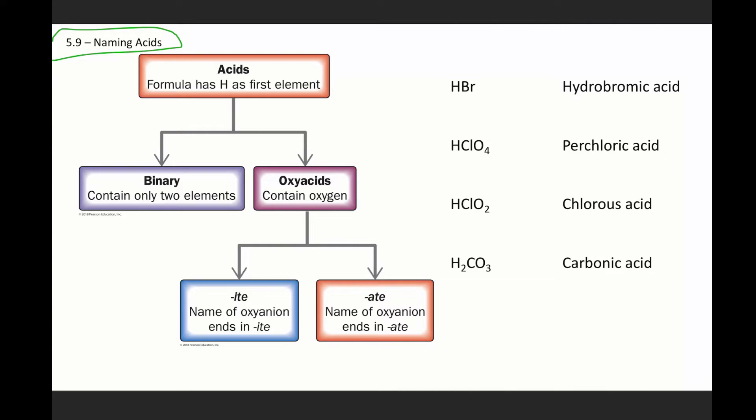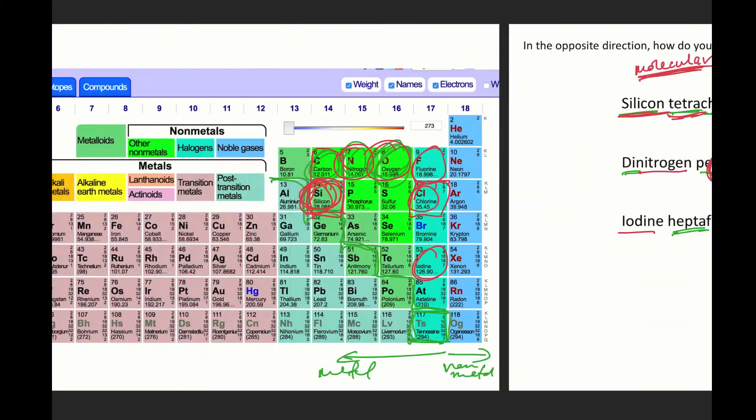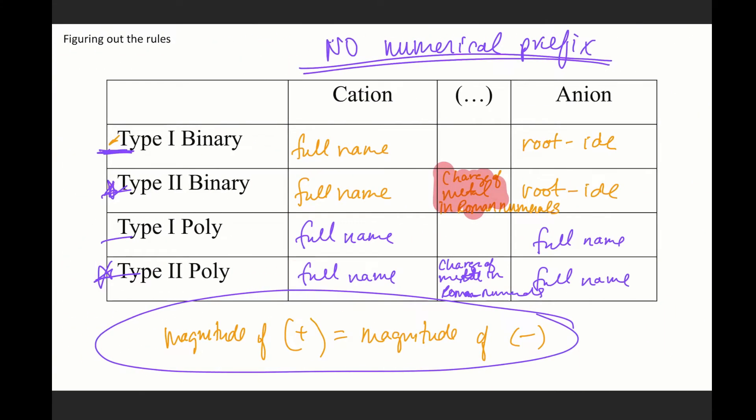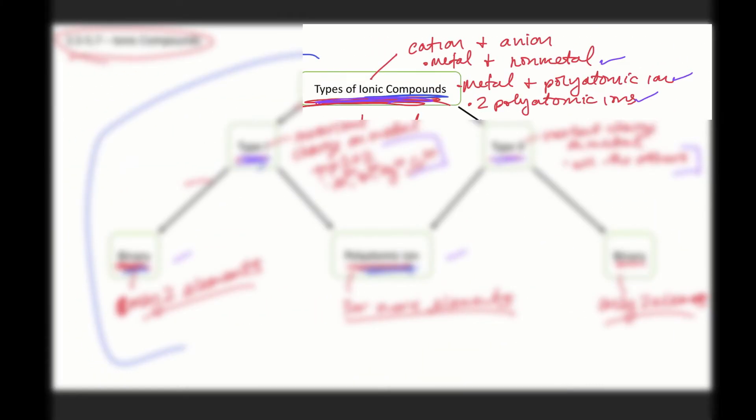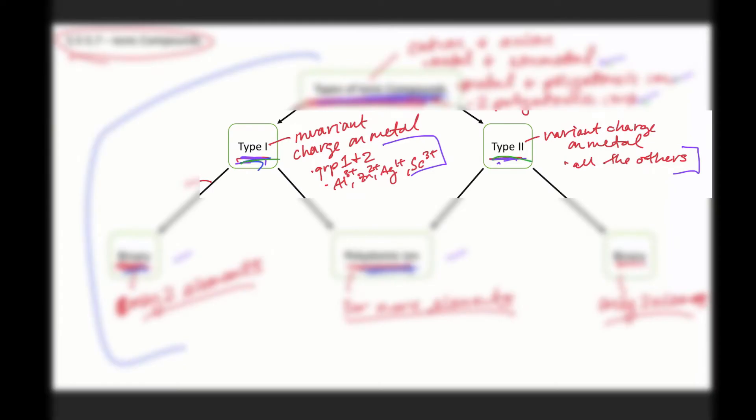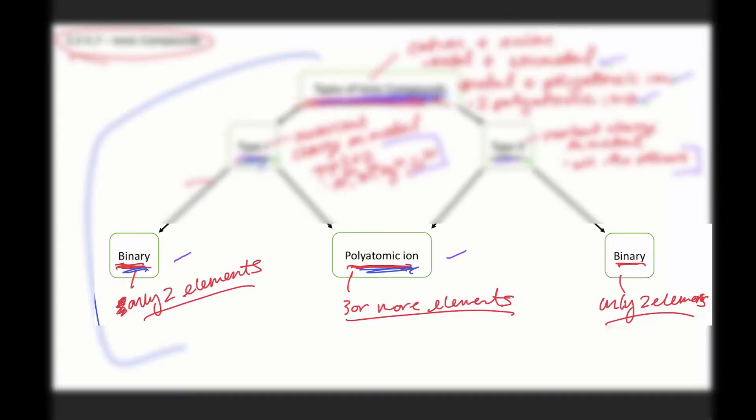Previously, we talked about naming ionic compounds. Ionic compounds, as a refresher, can have a metal and a non-metal, or a metal and a polyatomic ion, or a combination of polyatomic ions. It can be type 1 or type 2, and then from there, we would further differentiate into binary or polyatomic ion.